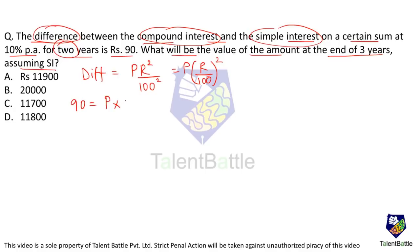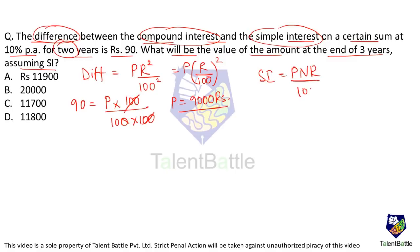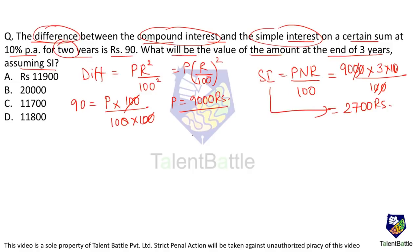The difference between compound interest and simple interest on a certain sum at 10% per annum for 2 years is Rs. 90. Using the formula: CI − SI = P × R² / 100² for 2 years, we get 90 = P × 100 / 10000, so P = 9000 rupees. The simple interest over 3 years is PNR/100 = 9000 × 3 × 10 / 100 = 2700 rupees, giving a total amount of 9000 + 2700 = 11700 rupees, which is option C.